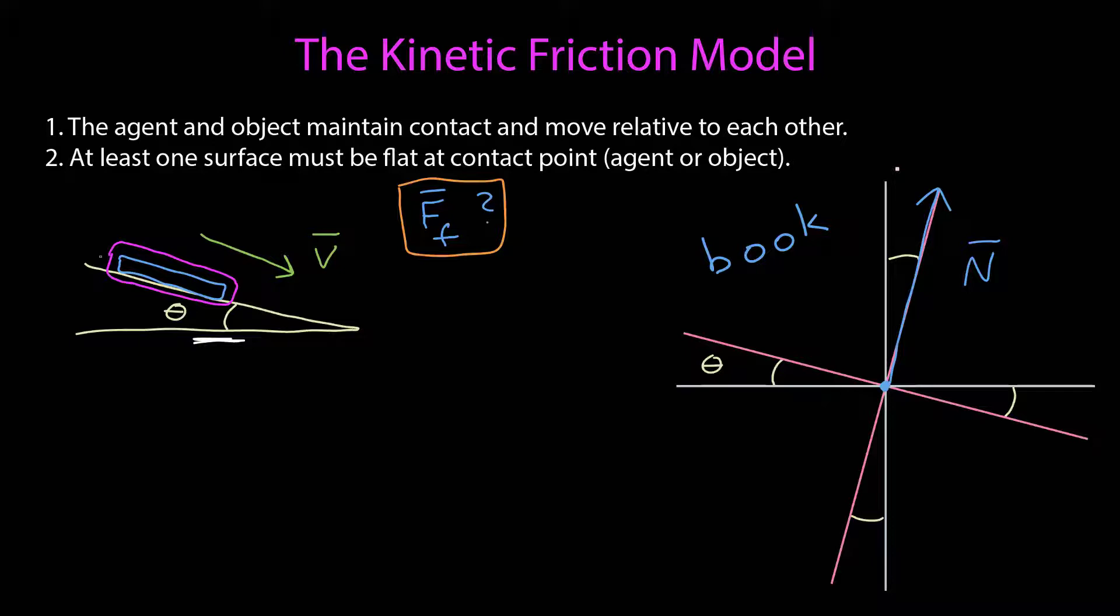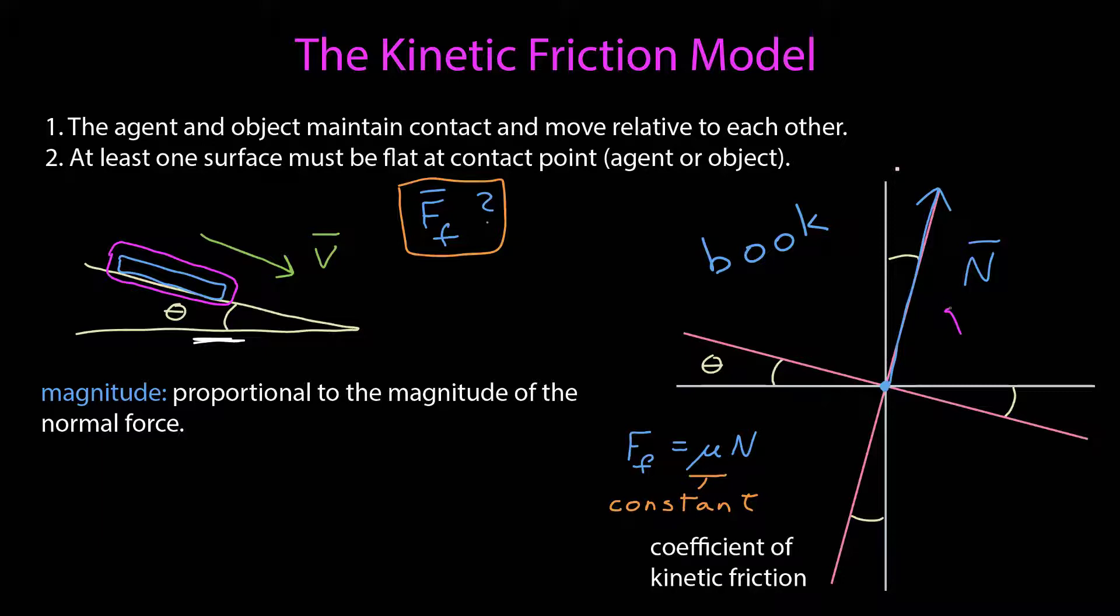Our model of the kinetic frictional force says that the magnitude of our frictional force is proportional to the magnitude of the normal force. If it's proportional, that means I can write it in this form: the magnitude of the force is equal to some constant times the magnitude of the normal force. This constant has its own name, the coefficient of kinetic friction.